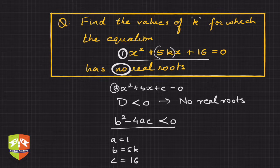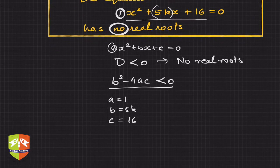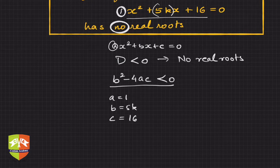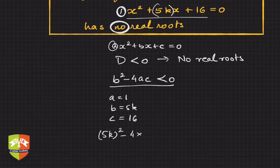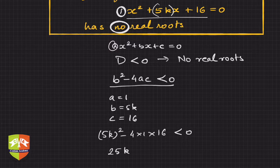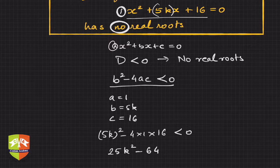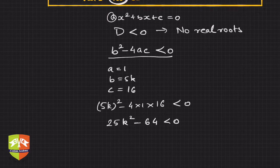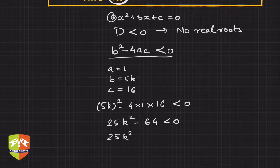And c is clearly 16. So b² is (5k)² minus 4 × 1 × 16, which must be less than 0. (5k)² is 25k², so 25k² minus 64 < 0.